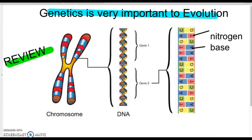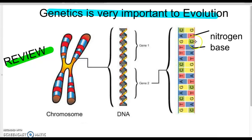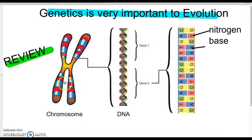We need to remember our genetics unit — about DNA and the components. Starting really big, we have a chromosome, a duplicated chromosome. If you zoom in, it's a bunch of condensed DNA. DNA is made into genes, which are fragments of DNA. And if you zoom into a gene, genes are made of nitrogen bases or nucleotides. Every letter is one nitrogen base in a nucleotide.